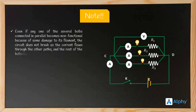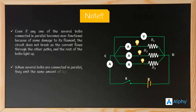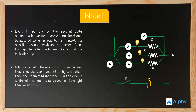The rest of the bulbs continue to light up. When several bulbs are connected in parallel, they emit the same amount of light as when they are connected individually in the circuit, while bulbs connected in series emit less light when connected individually. I hope you now understand parallel connections. Thank you.